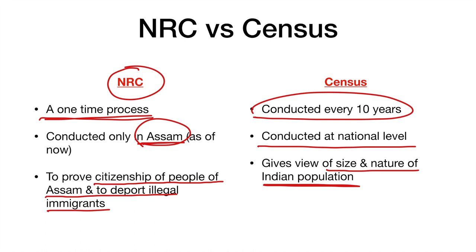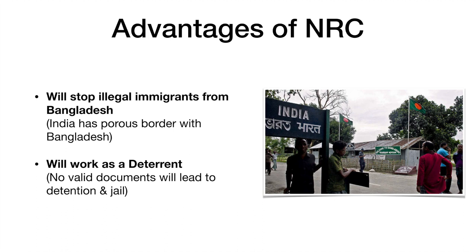Do not get confused between census and NRC. Coming to the advantages of NRC: the main advantage is that the porous border between India and Bangladesh is creating problems for border management. Over the years, many Bangladeshi immigrants started entering India illegally, affecting the livelihood of local people near the border. A proper NRC will actually stop illegal immigrants from Bangladesh. It will also work as a deterrent tool — it is expected to deter future immigrants from Bangladesh from entering Assam illegally.